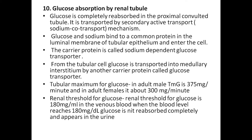The tenth question is glucose reabsorption by the renal tubule. Glucose is completely reabsorbed in the proximal convoluted tubule by secondary active transport, i.e., the sodium co-transport mechanism. Glucose and sodium bind to a common protein in the luminal membrane of tubular epithelium and enter the cell. The carrier protein is called sodium-dependent glucose transporter. From the tubular cell, glucose is transported to the interstitium by another carrier protein called glucose transporter. The tubular maximum for glucose in adult males is 375 mg/min, and in adult females is 300 mg/min. The renal threshold for glucose is 180 mg/dl; when blood level reaches 180 mg/dl, glucose is not reabsorbed completely and appears in the urine.